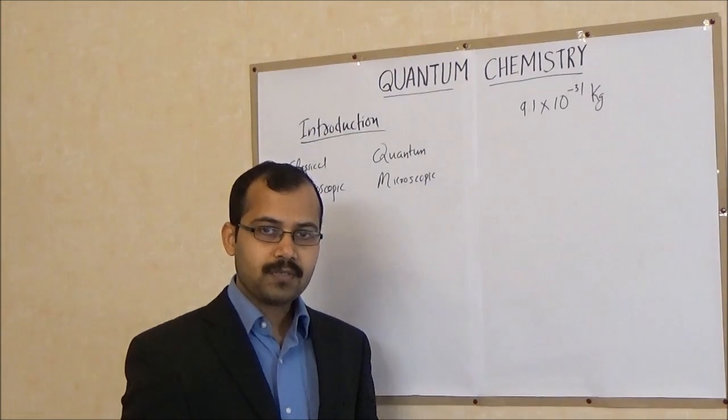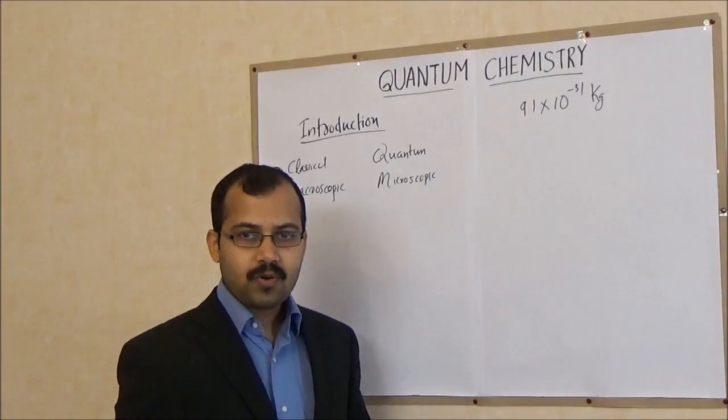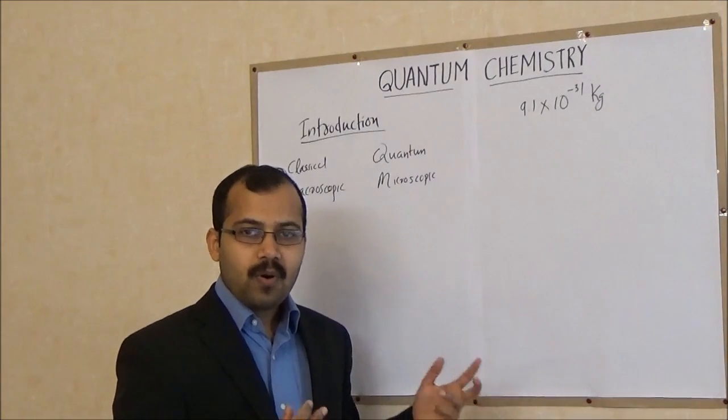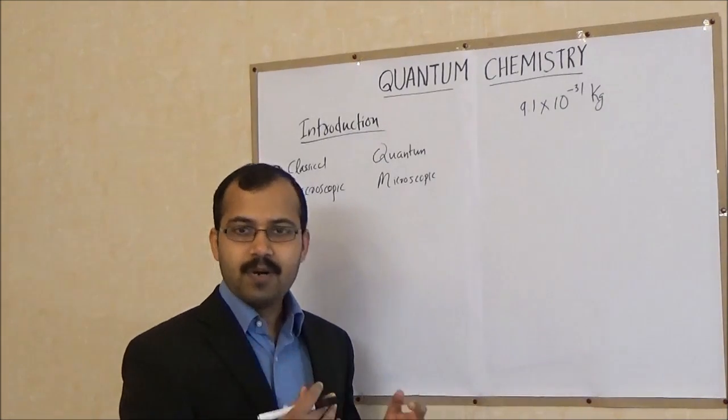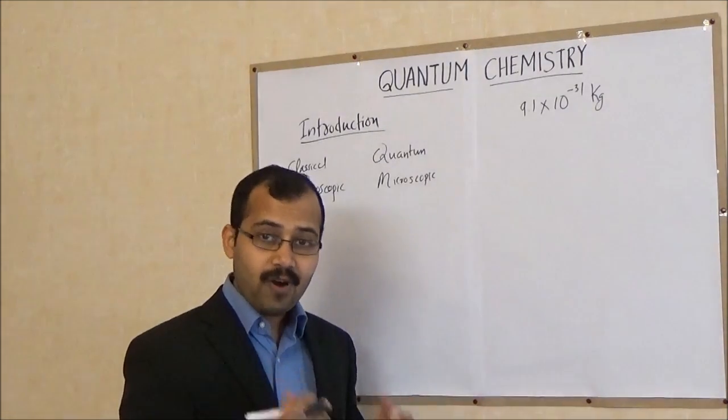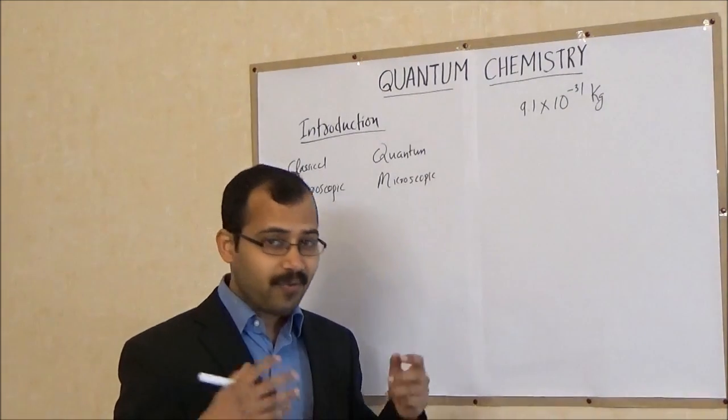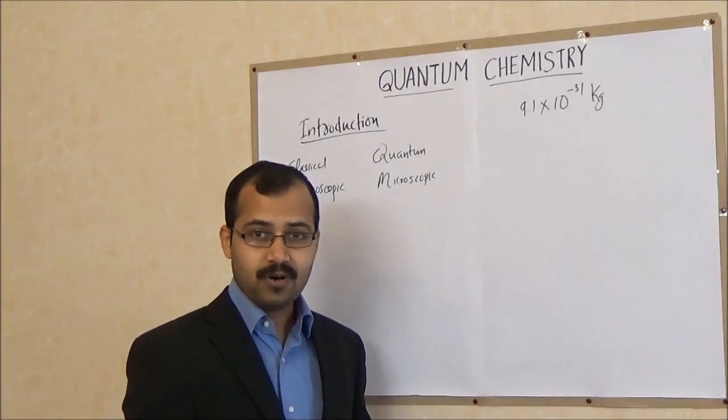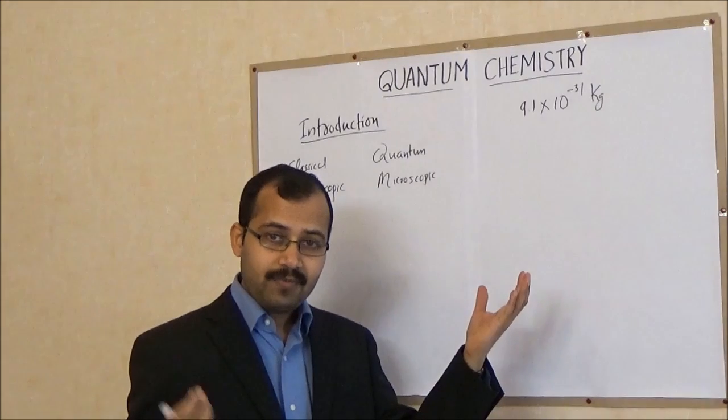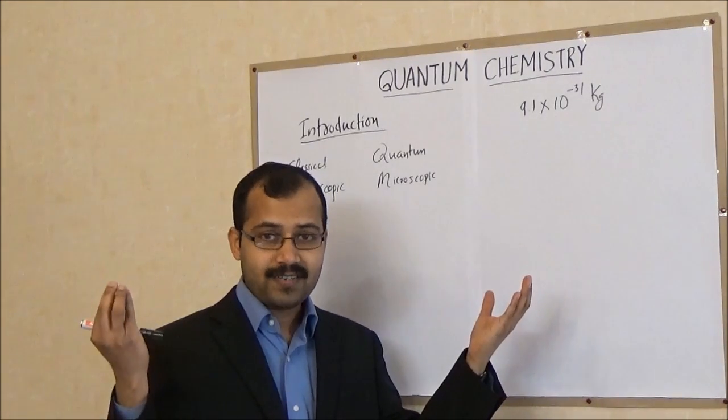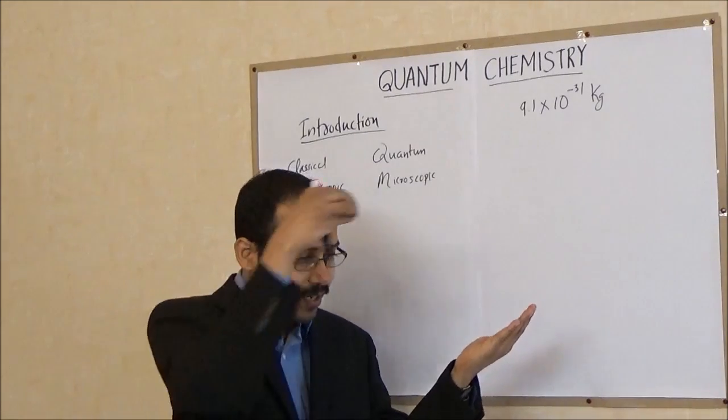Earth was formed 4.5 billion years ago. And suppose that there was a demon on this earth from day one. And this demon is a fantastic demon. Why fantastic? Because he can do a fantastic job. He has a glass on his left hand and with his right hand he can collect 10 billion electrons in every second and put it in this glass.